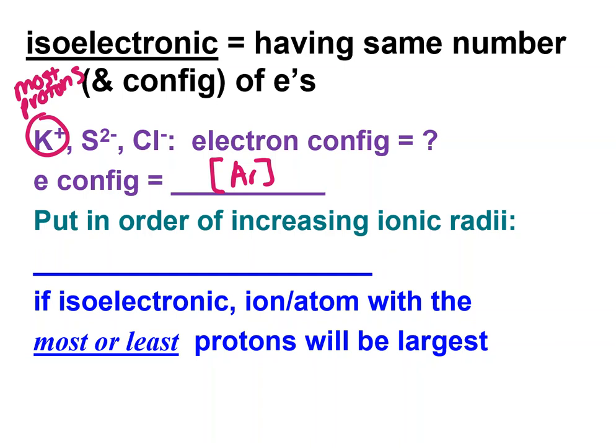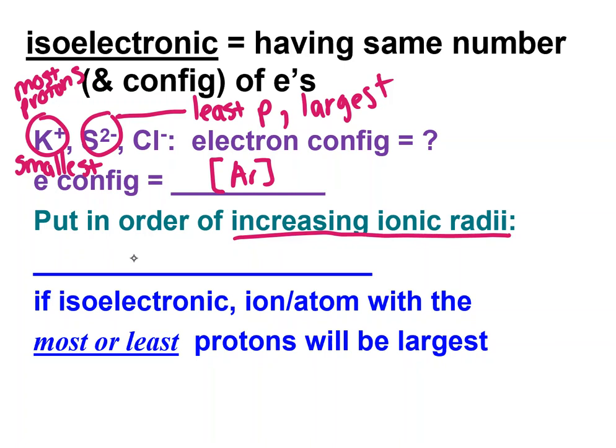And would having more protons make them smaller or larger? It would make them smaller, because there's more positive charge pulling in those electrons in the center. So more makes it smaller. And I should say of the three it's the smallest. And then sulfur or sulfide has the least protons. So it's the largest. And on these questions you have to kind of watch for the wording. If I'm doing increasing that means I'm starting with the smallest. And then my middle size is my chloride and my largest was my sulfide. So if we're looking at atoms or ions that are isoelectronic, the one with the least protons will be the largest.